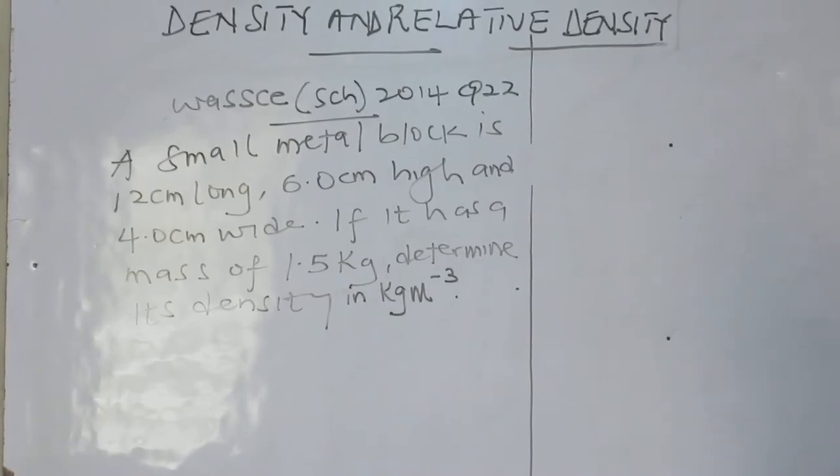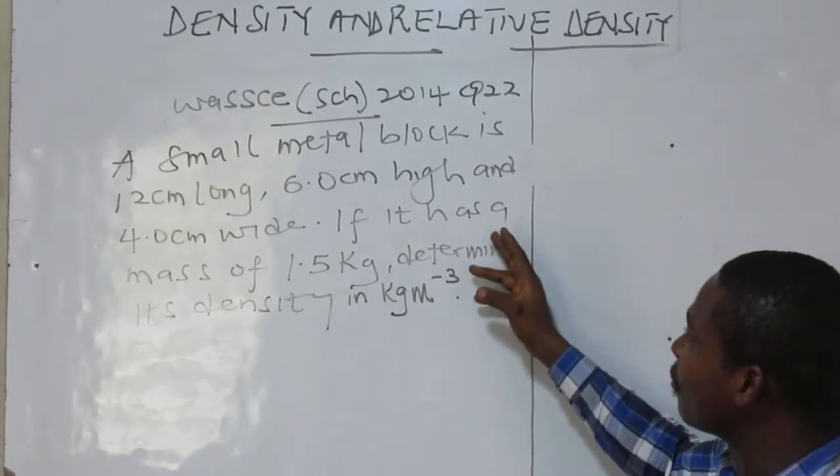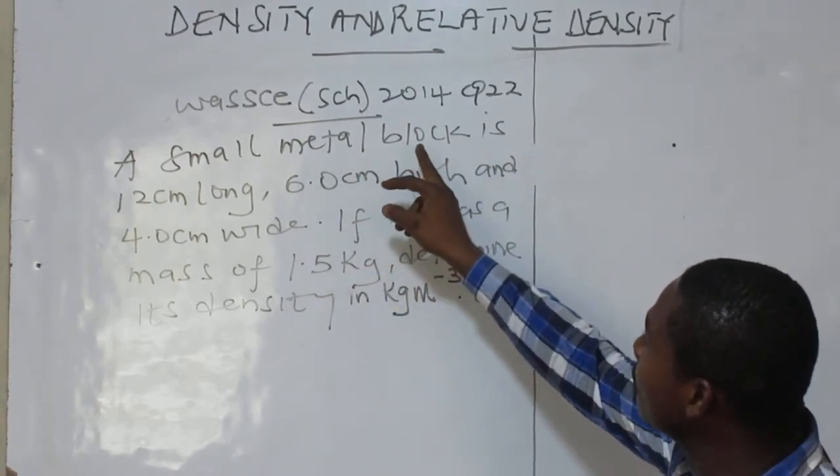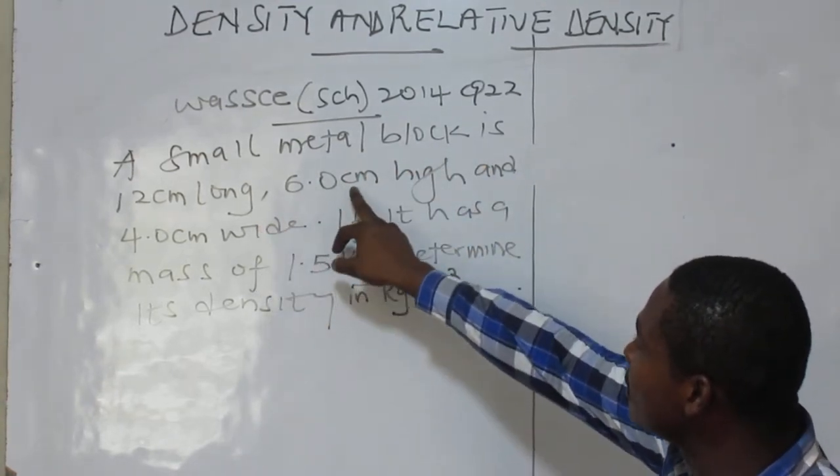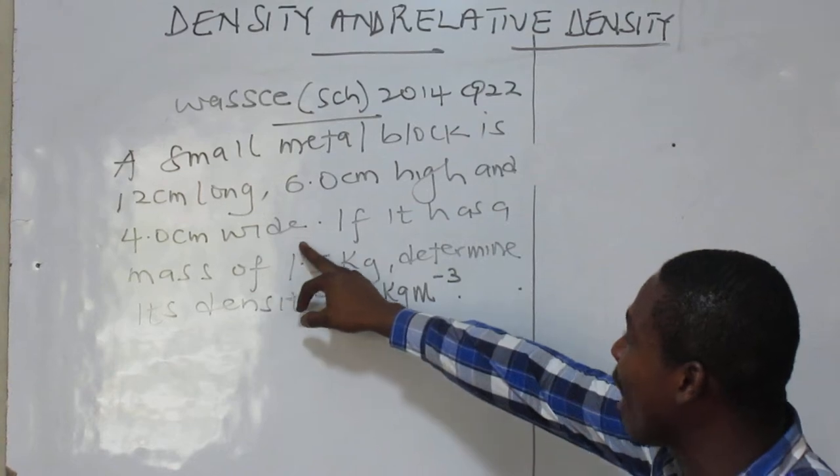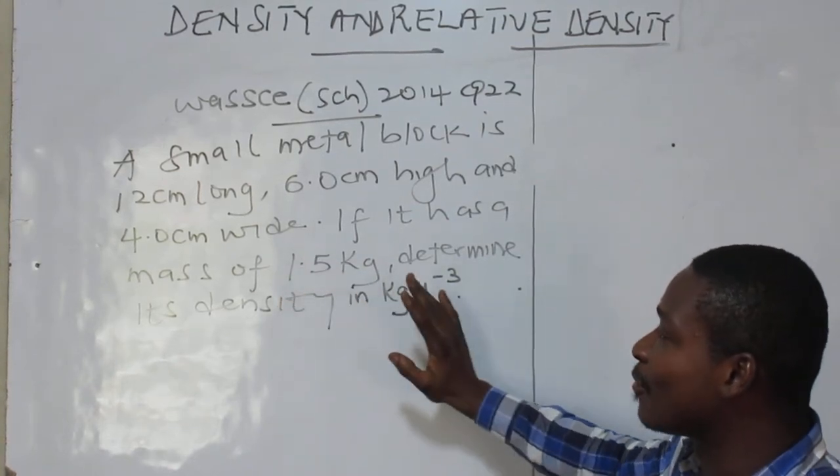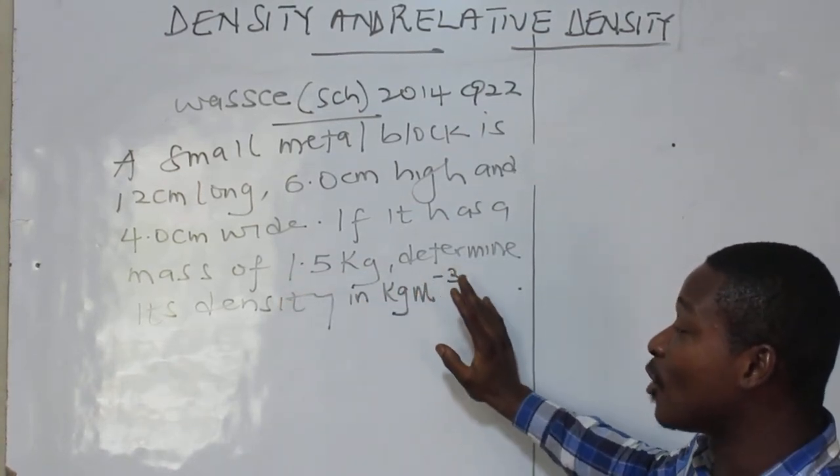Now let's start this question 2. This question is lacking the volume. A small metal block is 12 cm long, 6 cm high and 4 cm wide. It is lacking the volume. How are we going to get the volume here?